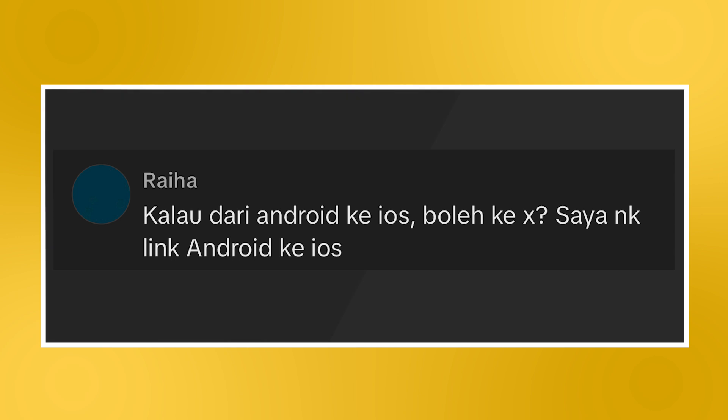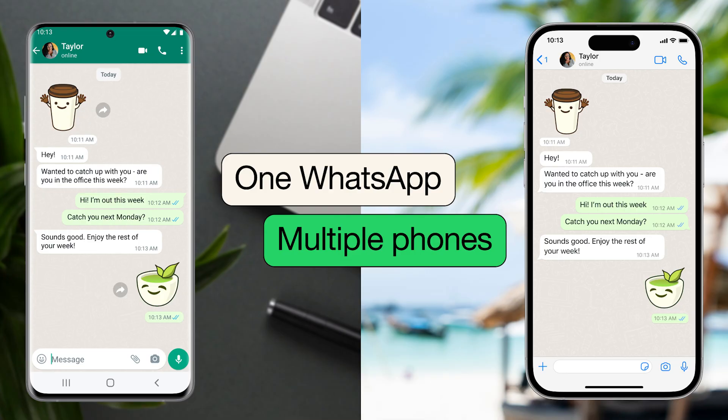Let's start the episode with a question about WhatsApp's linked device feature: how to link Android to iOS. WhatsApp recently updated its companion mode or linked devices feature to now support smartphones as a secondary device, in addition to WhatsApp on web browsers, desktops, and Android tablets. In total, WhatsApp allows you to link up to 4 devices to a single account.